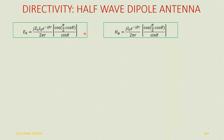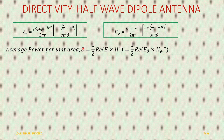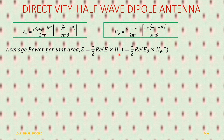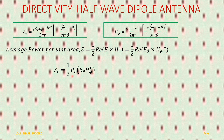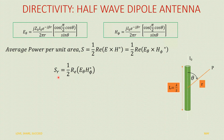Once we have E_theta and H_phi, we can compute the radiation density — the average power per unit area — as half the real part of E cross H, which is the time-average Poynting vector. That equals half the real part of E cross H conjugate. Since E_theta cross phi-hat gives r-hat, we get S_r equal to half the real part of E_theta * H_phi conjugate.